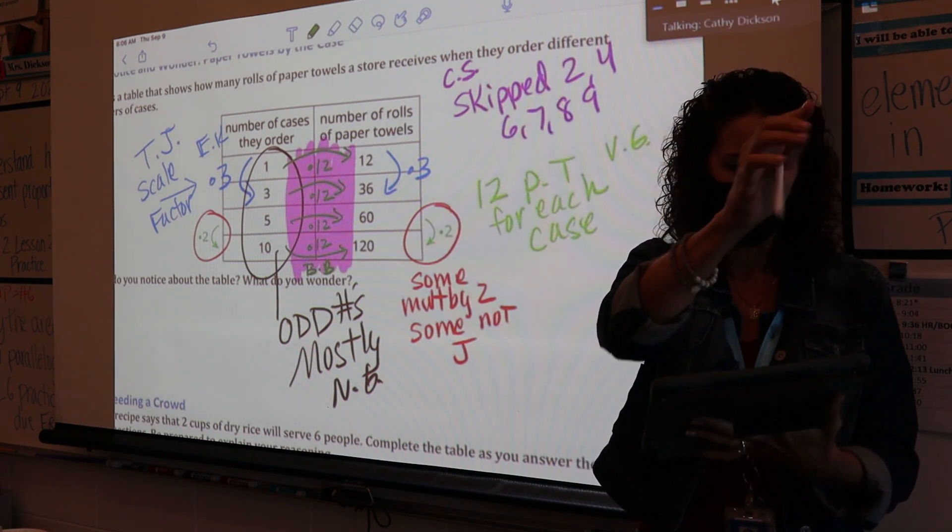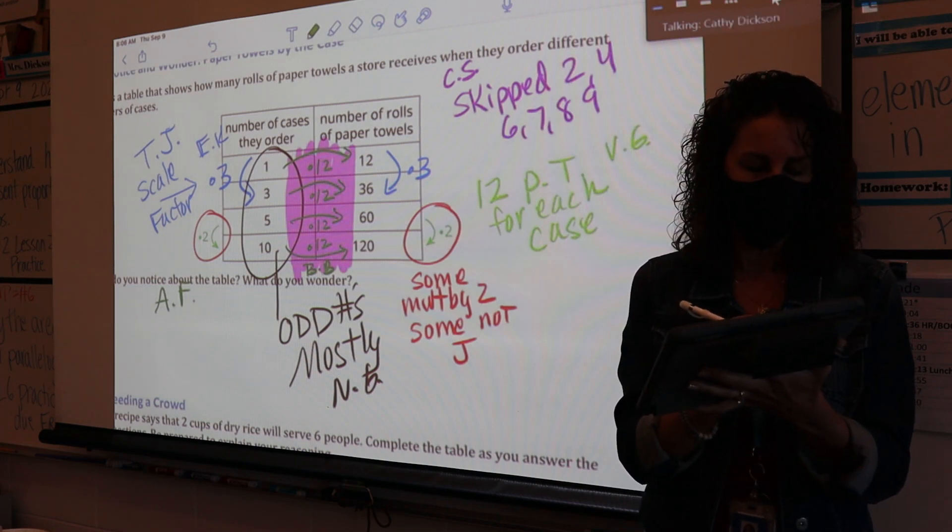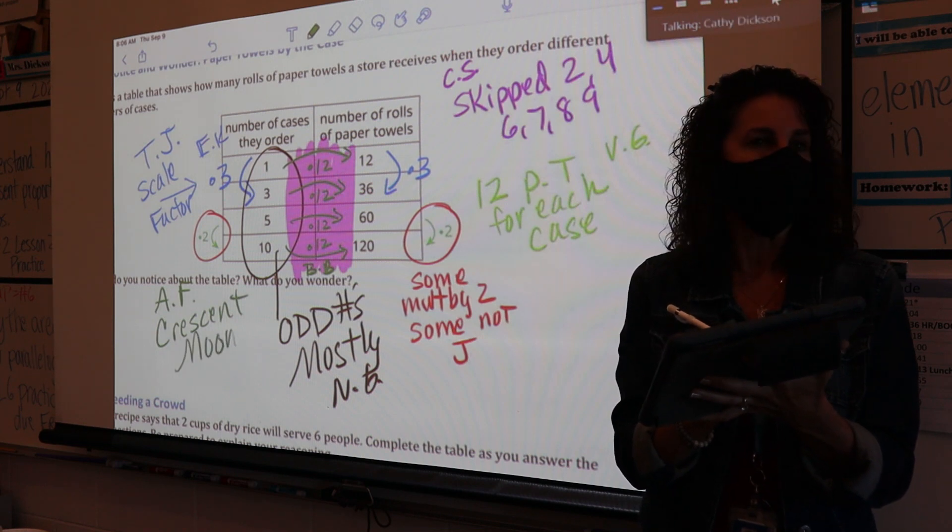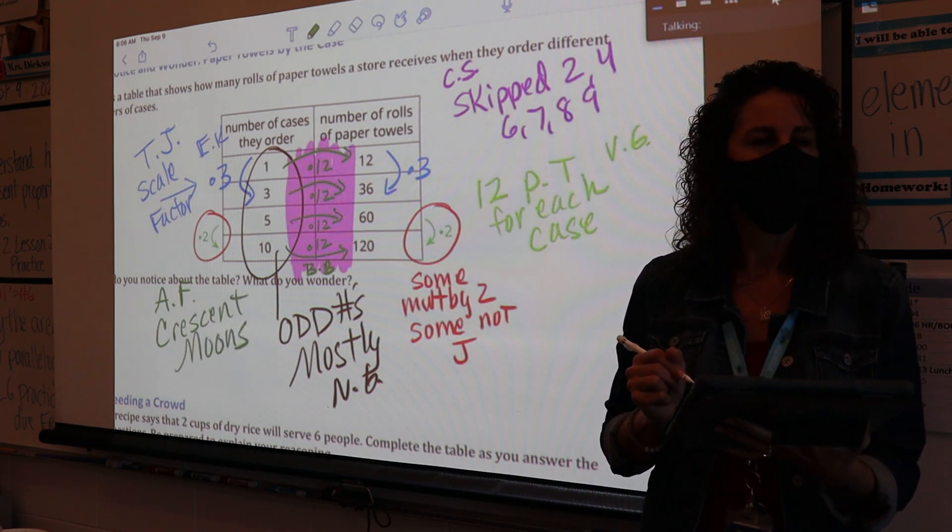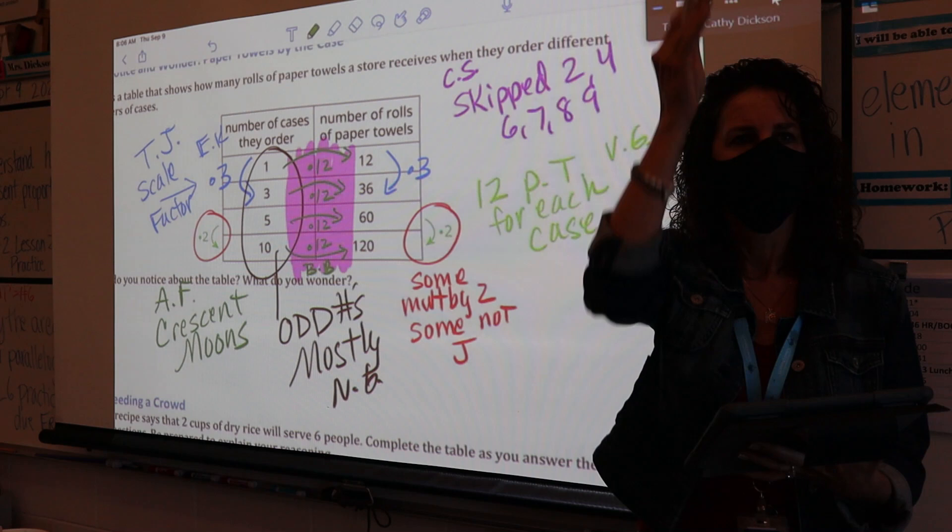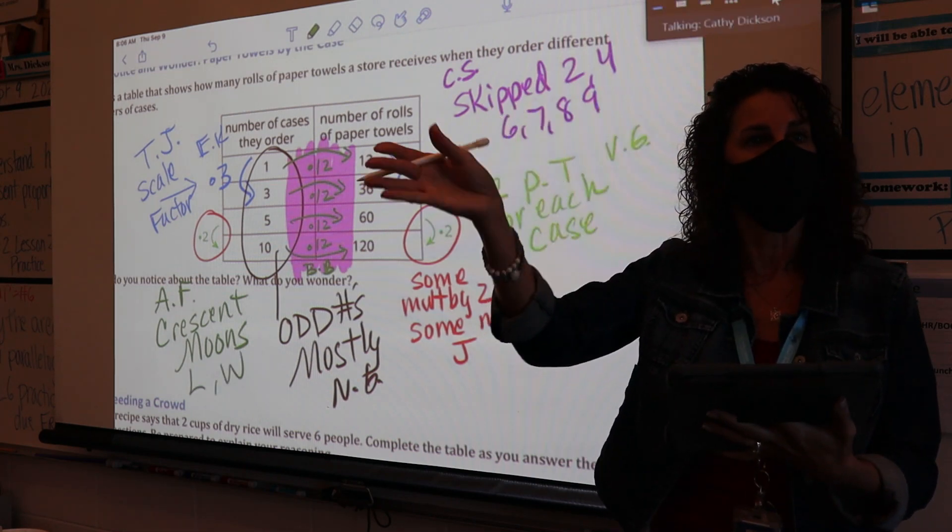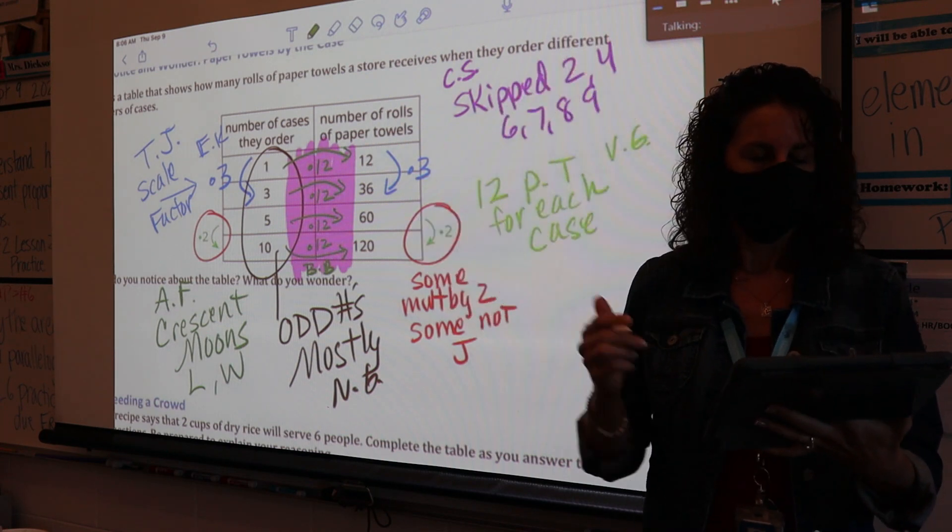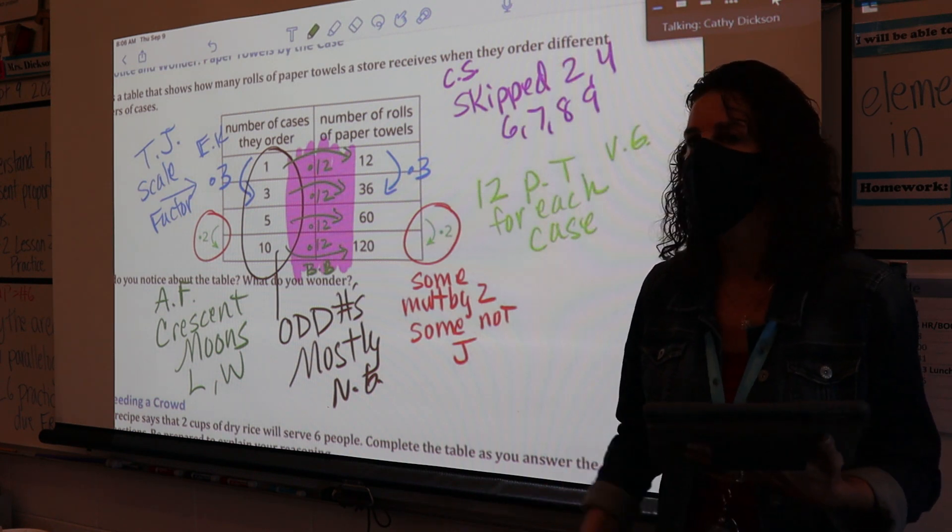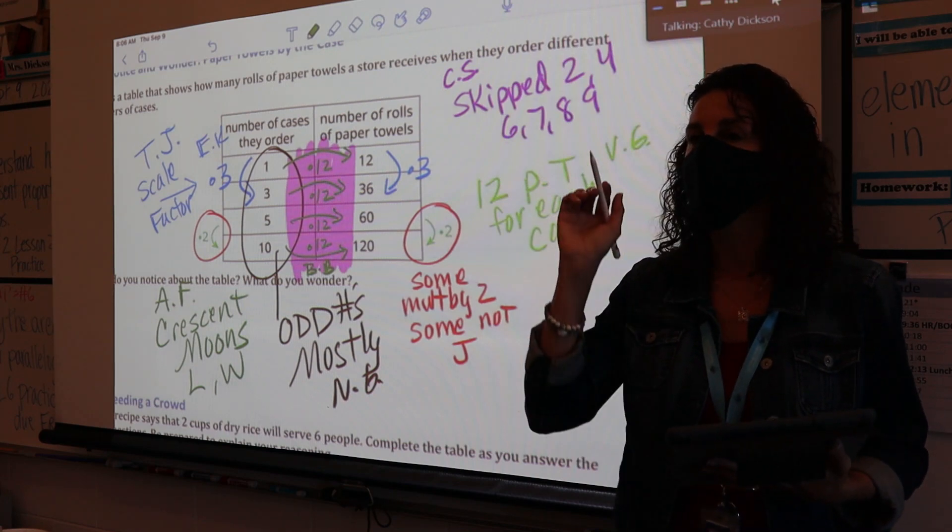Does anybody have a wonder based on that? Anybody have a wonder? What's your wonder? Okay, so you're connecting to the crescent moons. I love it. What do you, oh, it reminds you of it. Yeah, okay, so it reminds you of the crescent moons activity, and what's the same about it? In the crescent moons, we are comparing what? So we're comparing the L and the W, the length and the width, and here we're comparing cases to rolls of paper towels. That's an excellent noticing. One, two, three. So we are going to dive into this lesson and find out more about how we can use tables to see proportional relationships.